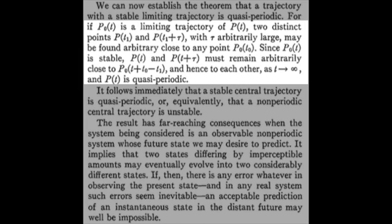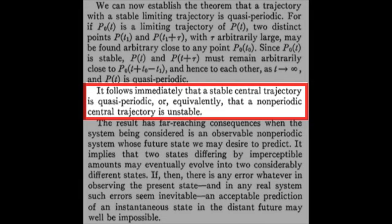Since a central trajectory is just a special case of a limiting trajectory, a stable central trajectory must also be quasi-periodic. And the contrapositive of this, which actually means something to us, is that any non-periodic central trajectory is unstable. The important part about this means that any two trajectories that start close to each other will inherently not remain close to each other as time goes on. We don't know how far apart they'll drift, but we do know that they must not remain close to each other.